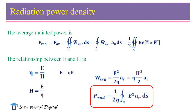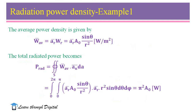In this way, we calculate the radiated power by an antenna. The power density associated with the electromagnetic fields of an antenna in its far-field region is predominantly real, which is referred to as radiation density. Next, we are coming to radiation power density.